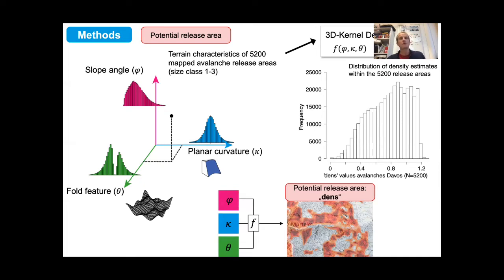We only considered slopes between 30 and 50 degrees slope angle; everything above was defined as extreme terrain and was not considered.